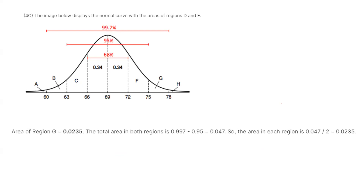With the same argument, we can calculate the remaining areas. The area of the region between two and three standard deviations on each side is 2.35%. We know the area within three standard deviations is 99.7% and within two standard deviations is 95%, so the remaining 4.7% is divided equally: 2.35% on each side.